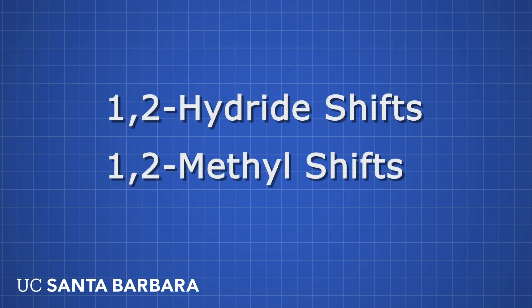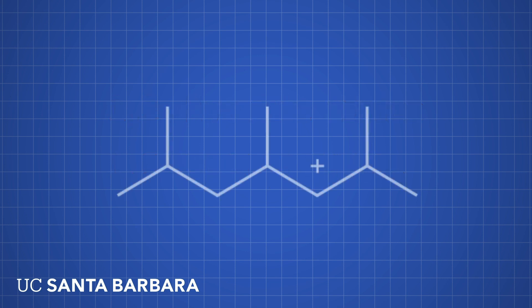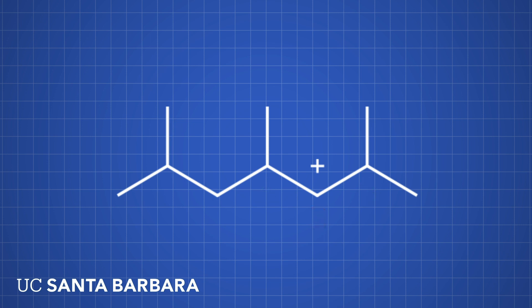One final point that's very important to bring up. We call these 1,2-hydride shifts and 1,2-methyl shifts for a very important reason — the shifts can only happen with adjacent carbons. So a carbocation in position three could only move such that the positive charge moves to position two or position four; it cannot move more than one space. A hydrogen on one side of the molecule cannot rearrange all the way down the chain to stabilize a carbocation, nor can a methyl group. It is for this reason that we call these 1,2-shifts, because it emphasizes that these shifts only occur on carbons adjacent to the initial carbocation.